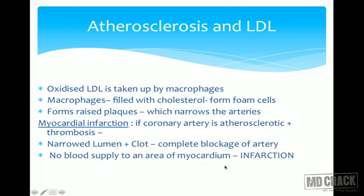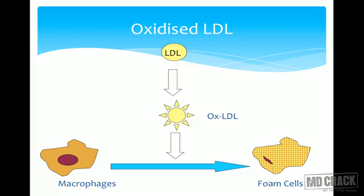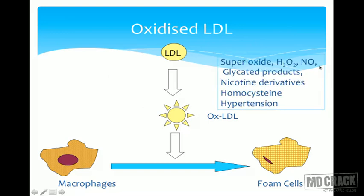LDL by itself does not usually cause atherosclerotic plaque formation — LDL must be modified. This modified form is called oxidized LDL; it could also be glycated LDL or nitrated LDL. Only when it is oxidized LDL do macrophages recognize it as abnormal, phagocytose it, and accumulate lipid droplets, converting the macrophage into a foam cell.